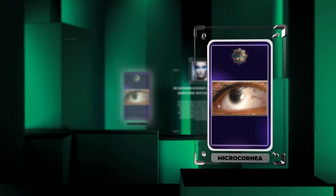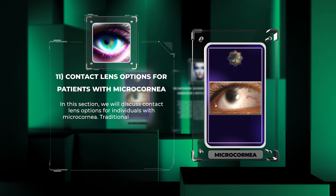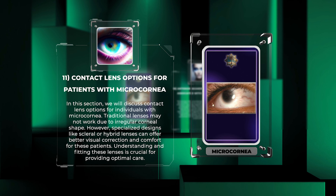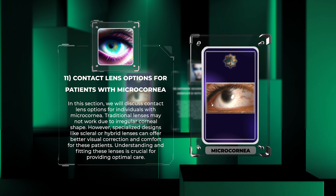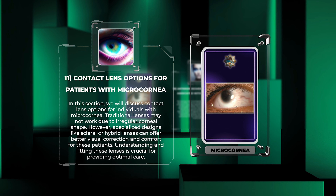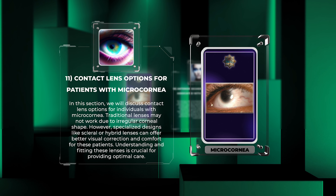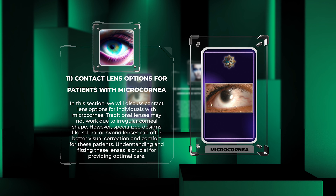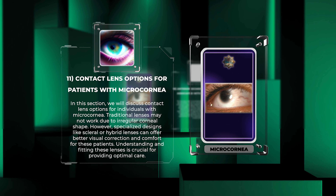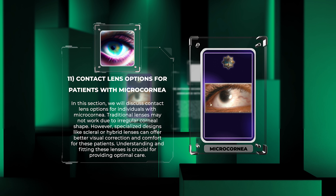Contact lens options for individuals with microcornea are an important consideration. Traditional lenses may not work due to irregular corneal shape. However, specialized designs like scleral or hybrid lenses can offer better visual correction and comfort for these patients. Understanding and fitting these lenses is crucial for providing optimal care.